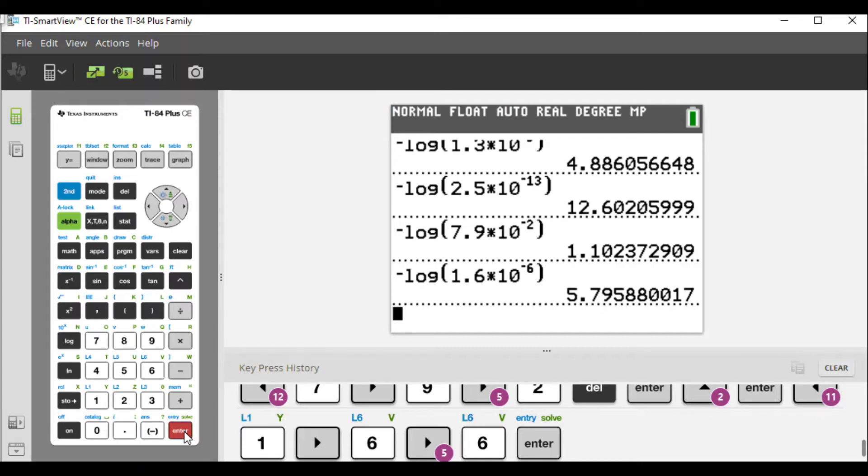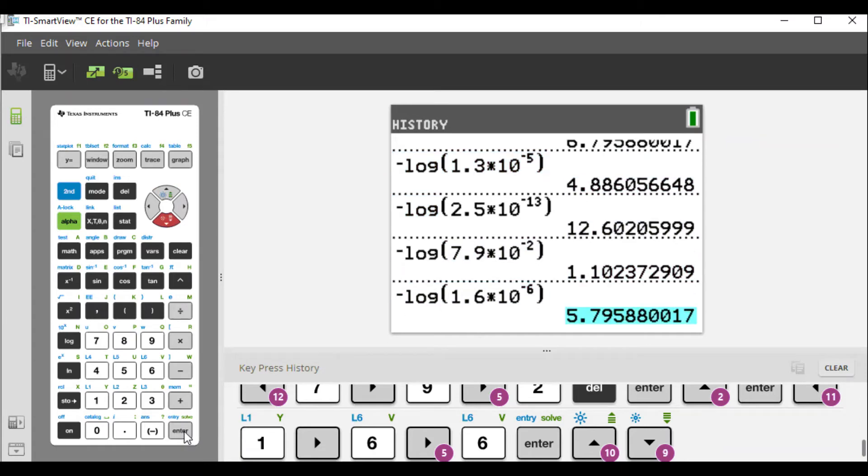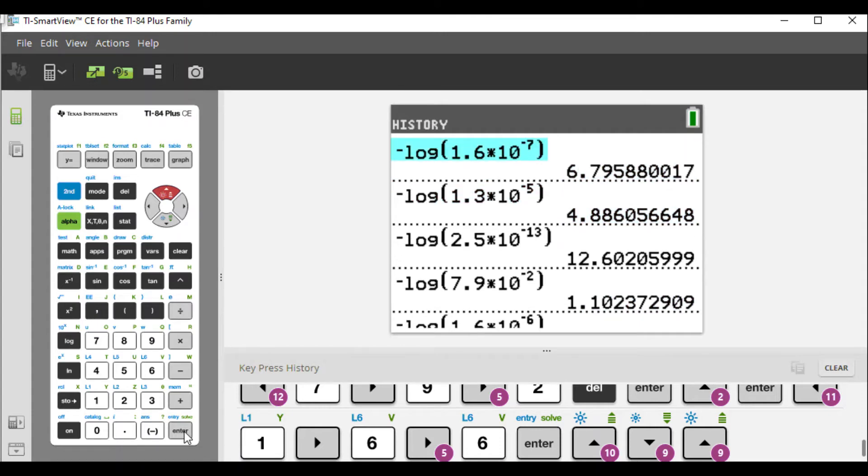It's interesting that this last one was really very close to our first one, because the first one was 1.6 times 10 to the negative 7 and this was 1.6 times 10 to the negative 6. And it looks like, if you want to scroll up now, we can see we went from 5.8 for the last one and 6.8 for the first one, so they're off by one. Interesting - not only that, they're also off by one as far as the exponent goes. The first one was 10 to negative 7, the second was 10 to negative 6.